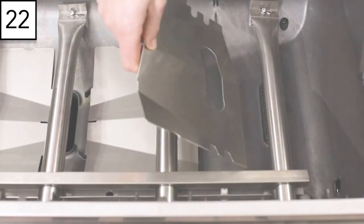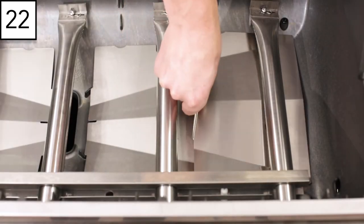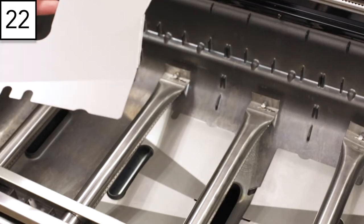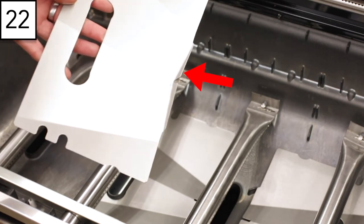Step 22. Install the two outer grease shields in the bottom of the cook box. Note the outer shields have a raised lip.